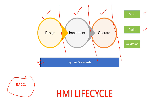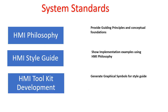Across all three lifecycle phases, there are three things that are common: MOC, audit, and validation. These three things can come anytime between these lifecycle phases. System standards as per ISA 101 consist of three different things: one is HMI philosophy, another is HMI style guide, and the third is HMI toolkit development. HMI philosophy provides guiding principles and conceptual foundations, HMI style guide provides implementation examples with respect to the HMI philosophy, and toolkit development involves generating graphical symbols for the style guide.